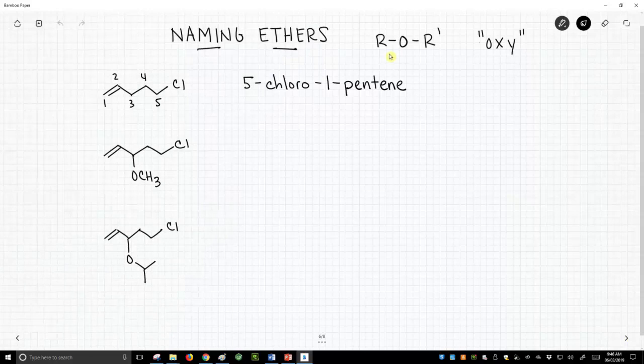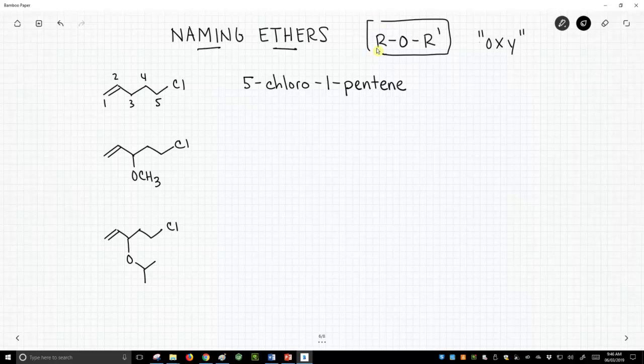So ethers – remember, ethers are an oxygen that is attached to two other carbon groups. So they don't have to be the same. It can be R and R prime. They can be different, but it's two different R groups.